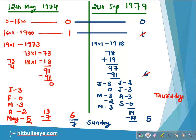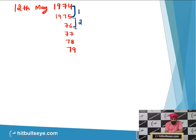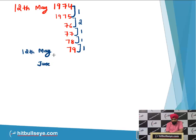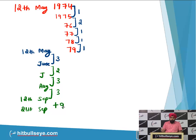Now let's solve using the other method. From 1974 we go to 1975 on 12th May: 1 odd day. 1975 to 1976: 2 odd days (leap year). 1976 to 1977: 1 odd day. 1977 to 1978: 1 odd day. 1978 to 1979: 1 odd day. We reach 12th May 1979. Now go from month to month: May end gives 3 odd days, June to July gives 3, July to August gives 3, August to September gives 3 — reaching 12th September. We want 21st September, so we need 9 more days.